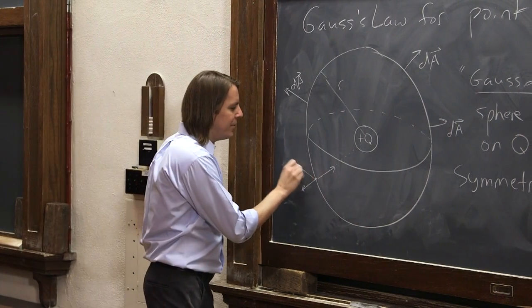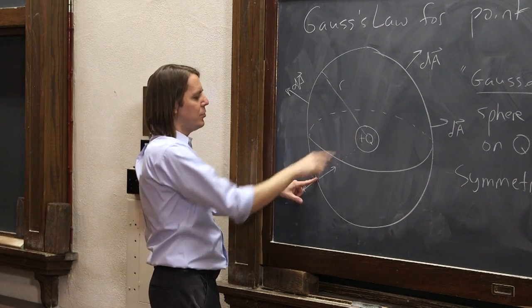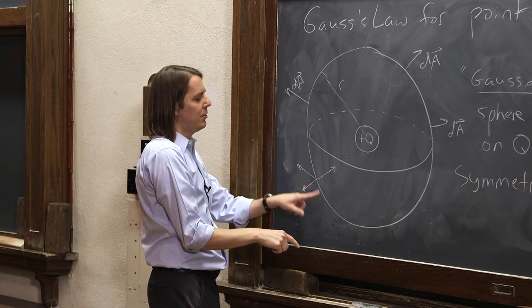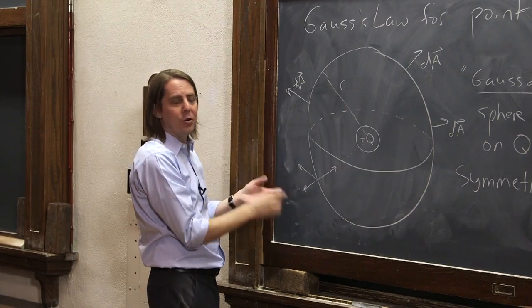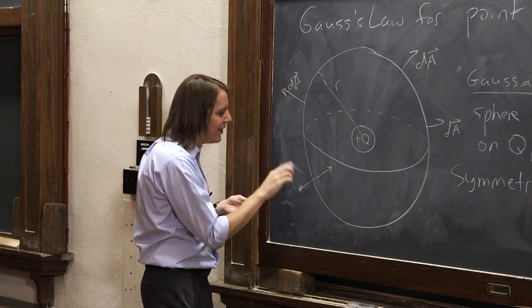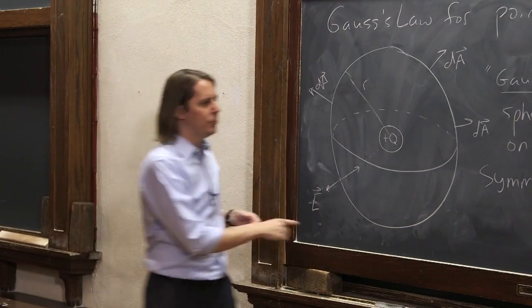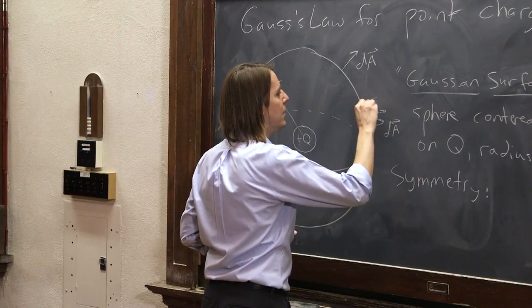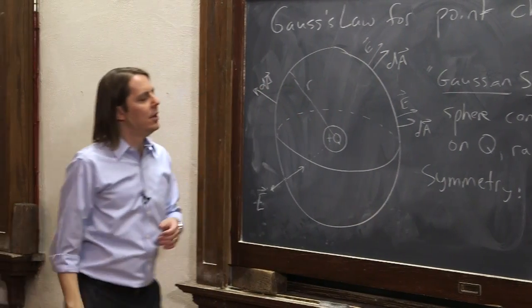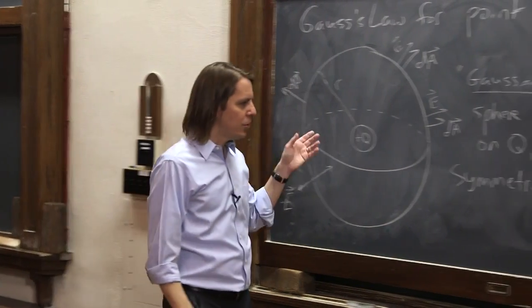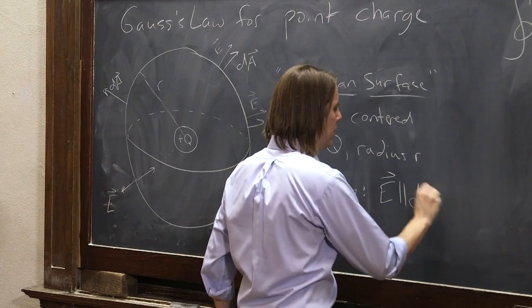It can't have a sideways component because there's nothing special about any sideways direction. The charge looks the same no matter where you go around that axis. Due to symmetry, the E field always sticks out radially. That's true anywhere on the sphere. So due to the sphere's symmetry with the charge at the center, E is always parallel to DA.